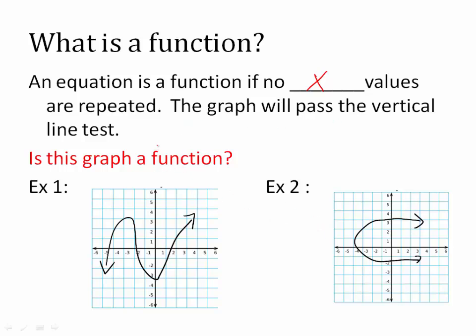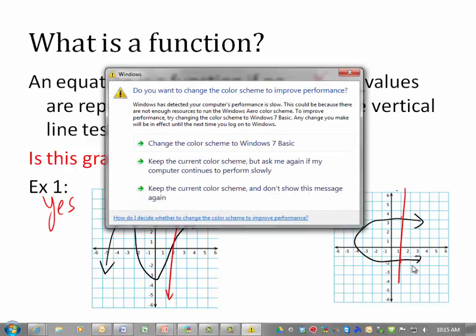Looking at these two graphs, you ask the question: is it a function? All I do is draw a vertical line. If it only hits the graph in one place, then yes, this is a function. Example 2: draw the vertical line, and I hit the graph in more than one place, so this cannot be a function. That tells you the x values are repeated — x is 1 both down here and up here. So x values cannot be repeated.